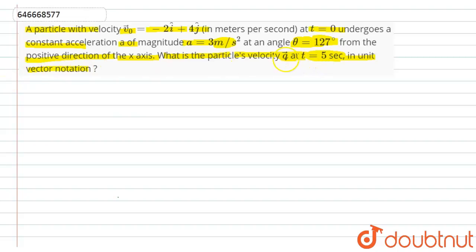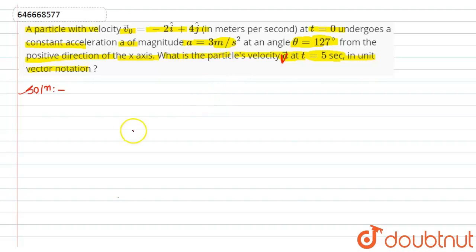This is the velocity vector v, okay. So let's see the solution. According to the question, what we have to find here is the particle's velocity at time t = 5 seconds in unit vector notation.